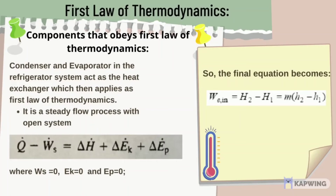The condenser and evaporator in the refrigeration system act as heat exchangers, which applies the first law of thermodynamics. This is a steady flow process with an open system, so the equation is: Q minus W equals delta H plus delta kinetic energy plus delta potential energy.